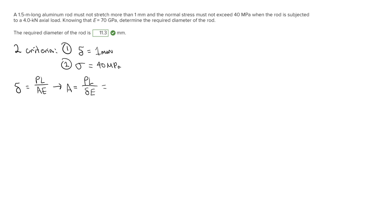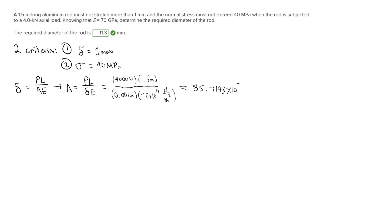Plugging in what we know: P = 4.0 kilonewtons, which I'll convert to 4000 newtons. The length is 1.5 meters. The maximum deformation is 1 millimeter, which I'll convert to meters. The modulus of elasticity is 70 gigapascals, equal to 70×10⁹ pascals, where 1 pascal = 1 N/m². Keeping everything in newtons and meters, we get A₁ = 85.7143×10⁻⁶ m².